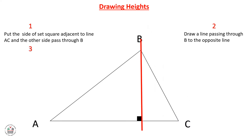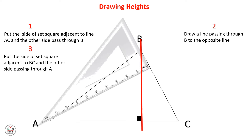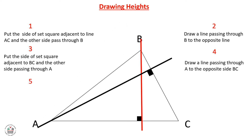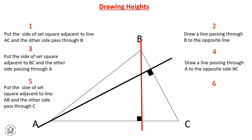For the second height, we need to put the side of the set square adjacent to BC, and the other side passing through A. Then we need to draw a line passing through A to the opposite side BC. And we do the same for the third height.